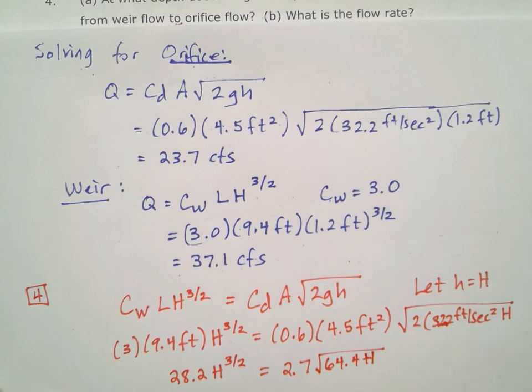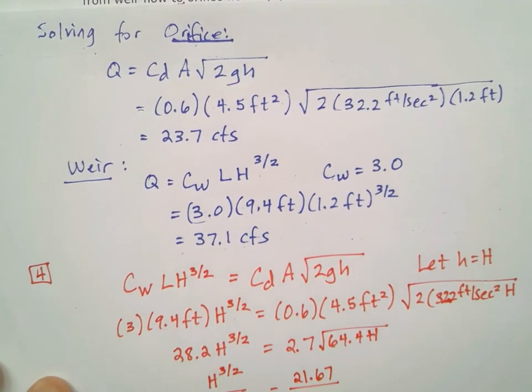Dividing both sides by H^(1/2), we have H^(3/2) over H^(1/2) here. Then taking 2.7 times the square root of 64.4, which is 21.67, and dividing that by 28.2.